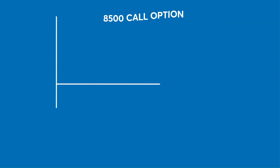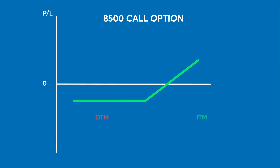Suppose another trader is long the December $8,500 call option. This call option is out of the money, will expire worthless, and will not result in a futures delivery. The loss on the position is limited to the premium paid for the option.